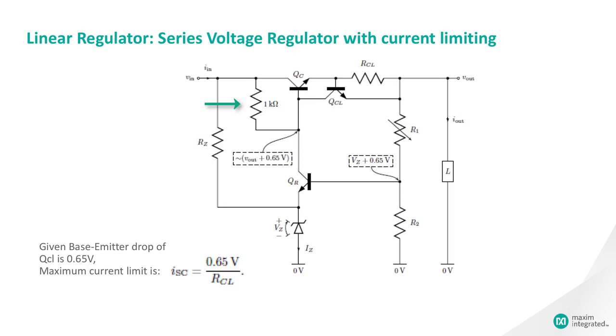This QCL current lowers the QC base, which causes QC to reduce its collector-to-emitter current. As VOUT falls, QR goes into cutoff, and QCL gains complete control over QC.